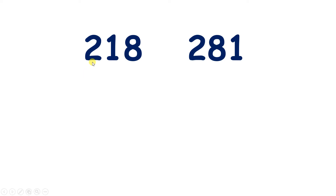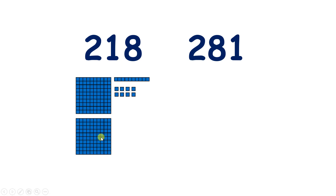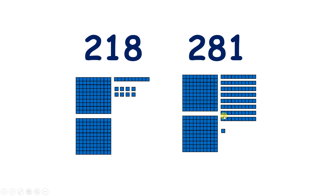Now we're comparing two numbers with the same number of hundreds. We have 218, so two hundreds, one ten, and eight units. And we have 281, so two hundreds, eight tens, and one unit. Which number is larger? Well, 218 is less than 281, because if you're comparing two three-digit numbers and the number of hundreds is the same, you then look at the number of tens. Here we have eight tens compared to one ten, so two hundred and eighty-one is the larger number.